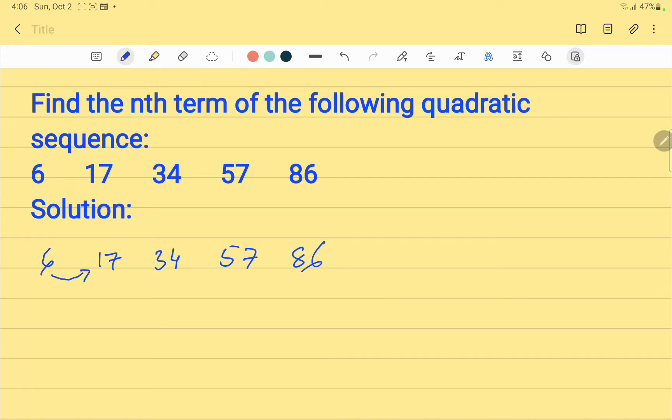So, 17 minus 6 is 11, 34 minus 17 is 17, 57 minus 34 is 23, and 86 minus 57 equals 29.